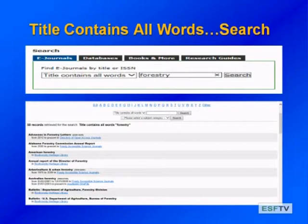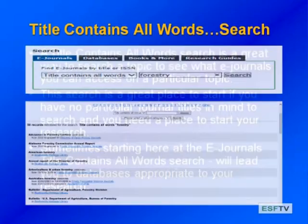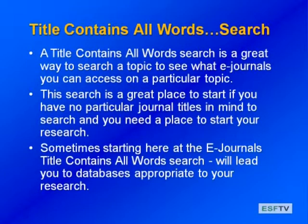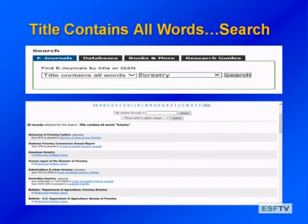Another search option, using the pull-down menu, is 'title contains all words.' This is a great search because you can put any keyword into the search box and it will return all e-journals we have access to in an alphabetical list. I searched for 'forestry' in this example and it brought back almost 60 results. It's a great way to search your topic to see what e-journals are out there, especially if you're just getting started on your research.